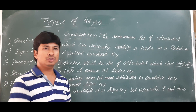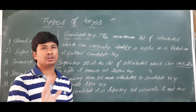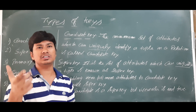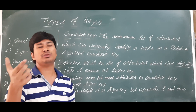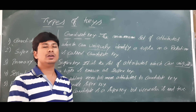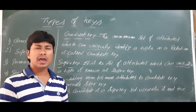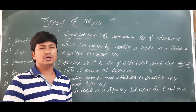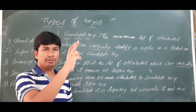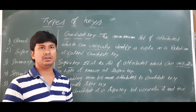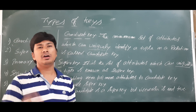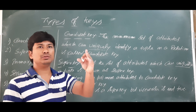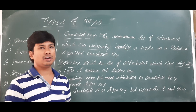Each car also has a chassis number, so using the chassis number we can also uniquely identify a car. At a showroom, they identify cars by chassis number because no one can change it. We also have an engine number — so a car can be uniquely identified by its registration number, engine number, or chassis number. In this case, we have three candidate keys.